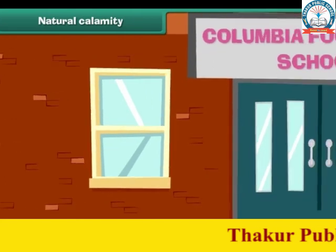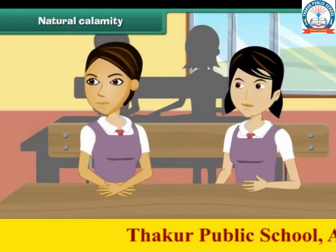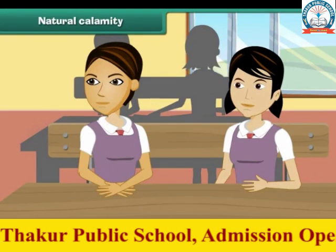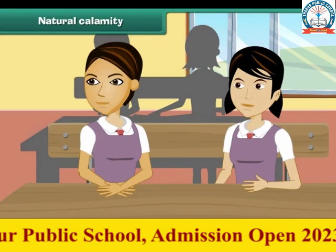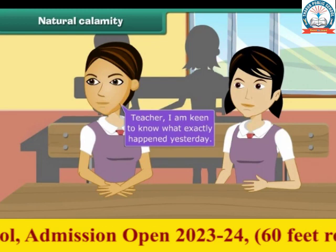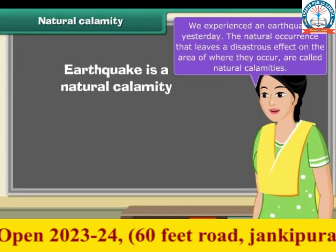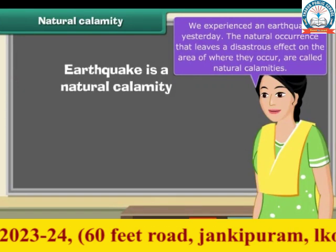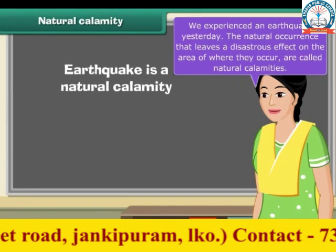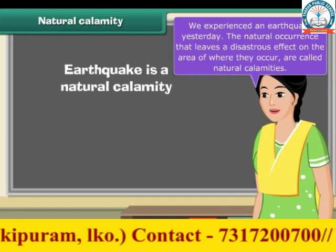Next day, Meena reached school. All the other students in class were curious about the incident. A student rushed to the teacher and said, 'I am keen to know what exactly happened yesterday.' The teacher replied, 'We experienced an earthquake yesterday. It is a natural calamity. Natural occurrences that leave a disastrous effect on the area where they occur are called natural calamities.'